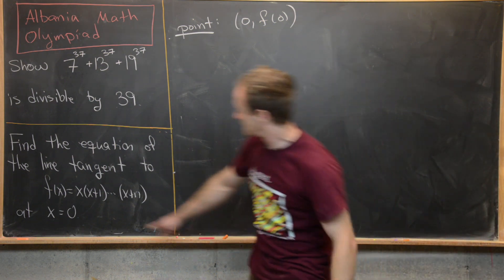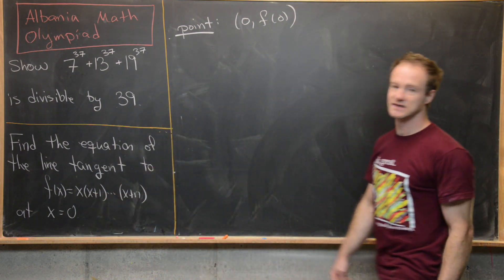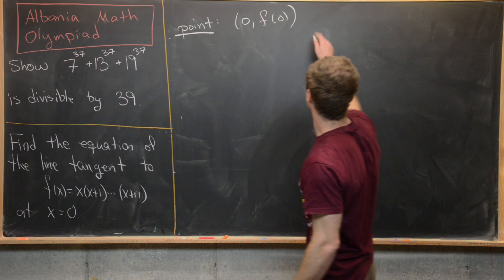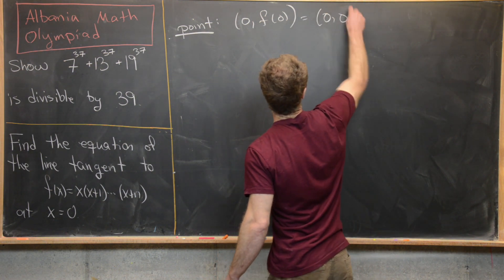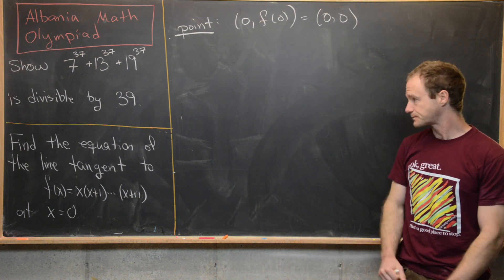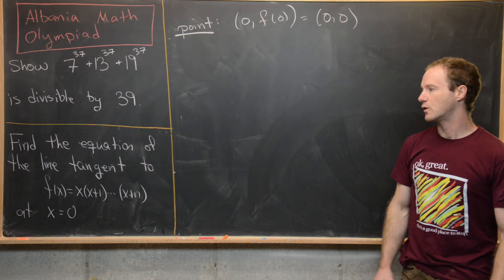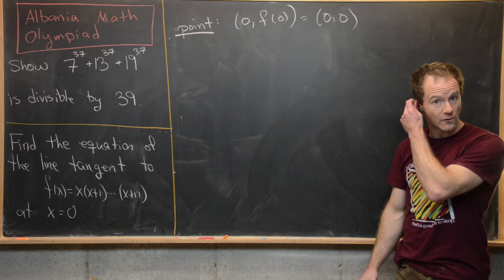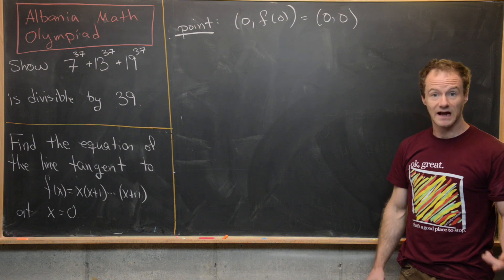But since this is a multiple of x, well, the y value is also going to be zero. So here we have zero, zero, that's our point, this thing goes through the origin. Now we know that the equation of this tangent line is going to be of the form y equals mx. So all we have to do is find that slope.